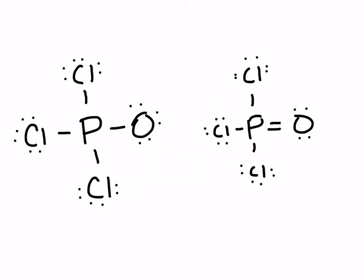Here I have two different models of the same atoms: PCl3O. Let's see which is the better structure. For phosphorus, it should own five valence electrons. In the first structure it owns one, two, three, four — one less than it should — giving a plus one formal charge. In the second structure it owns one, two, three, four, five — so it has a formal charge of zero. Already the structure on the right is looking better.